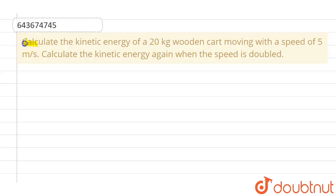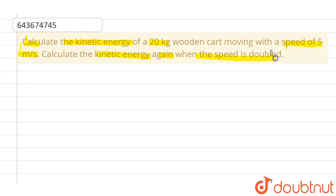This question asks us to calculate the kinetic energy of a 20 kg wooden cart moving with a speed of 5 meters per second. We also need to calculate the kinetic energy again when the speed is doubled.